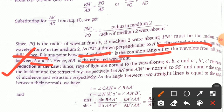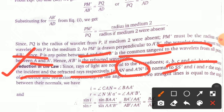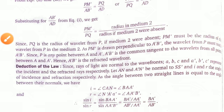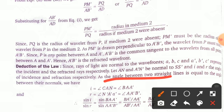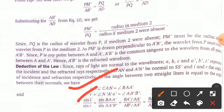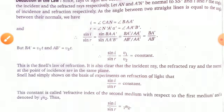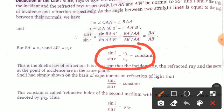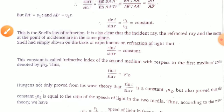Since the rays of light are normal to the wavefront, ABC and A'B'C' represent the incident and refracted rays respectively. Let AN and A'N' be the normals to SS', and i and r be the angles of incidence and refraction. Since the angle between two lines equals the angle between their normals, we write sin i / sin r. Substituting the values, we finally get sin i / sin r = v₁/v₂, which is a constant. This is Snell's law of refraction.